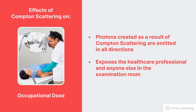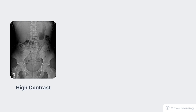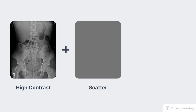Compton scattering also has a negative effect on the image. Compton scattering creates scatter, which in turn decreases image contrast. The combination of photoelectric effect and transmission creates what would otherwise be a high contrast, high quality image — meaning there are clearly visible differences in the shades of gray. Compton scattering and really any kind of scattering adds meaningless noise to the image, resulting in an overall decrease in image contrast.